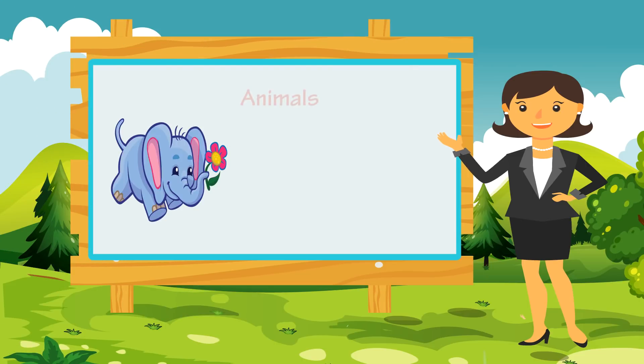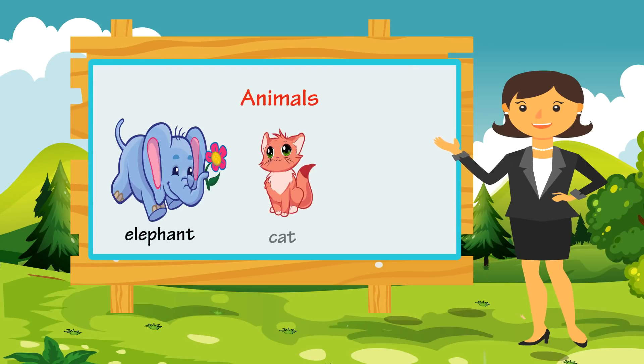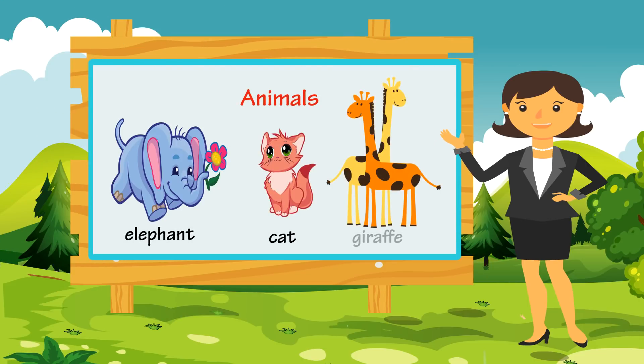Elephant, cat, giraffe — these names are examples of nouns which are animals.